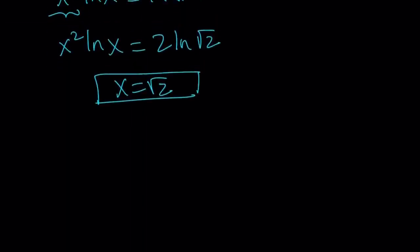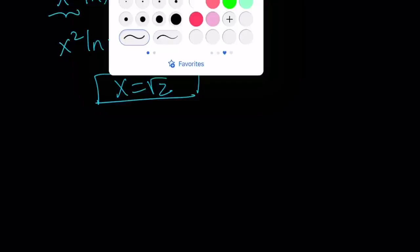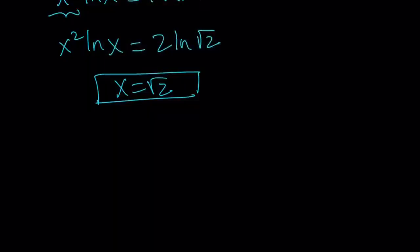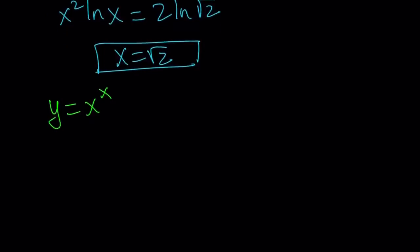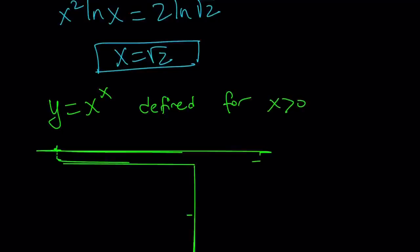Let's take a look at the functions. y equals x to the power of x is defined for positive x values — we already talked about that. For the second function, y equals 2 to the power 1 over x, that is defined for all x values except x equals 0.